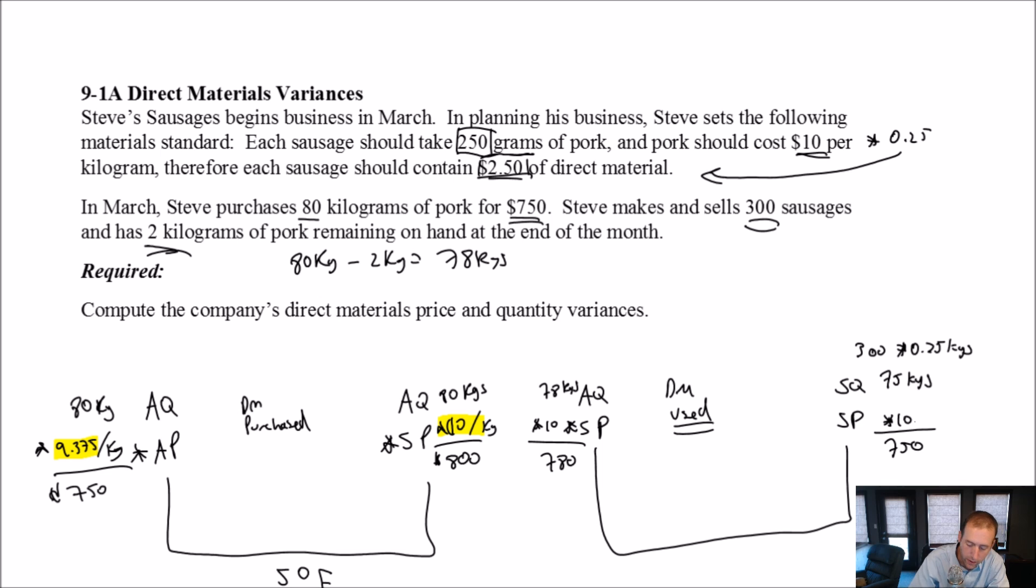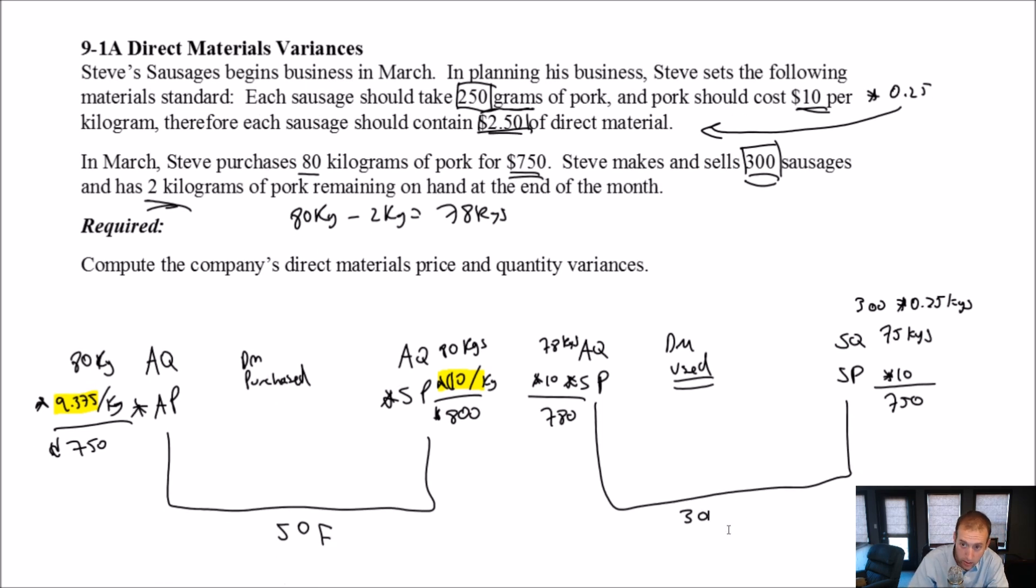The variance here, so again, if I told Steve before the month, hey Steve, you're going to make 300 sausages, Steve would have said, oh, I need 75 kilograms of pork. Now, he used more than that. He used 78. So the difference here is $30. That's the variance. And we've got to ask ourselves, is this variance a good variance or a bad variance? But of course, we don't say good or bad. We say, is it favorable or unfavorable? And to figure that out, I look at what's different, right? So the 10 and the 10 are the same, but 78 and 75 are different. And let's think about what this means. To make his 300 sausages, he actually used 78 kilograms. If we were planning, we would have planned on using 75. He used more than he had planned. And that makes this an unfavorable variance. He used too much pork.